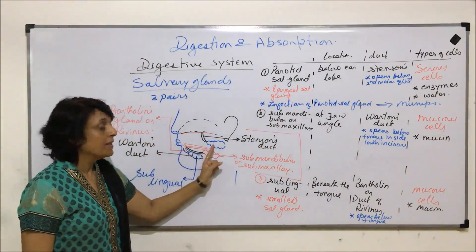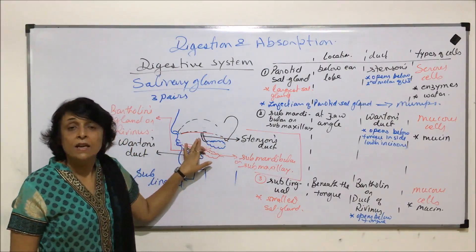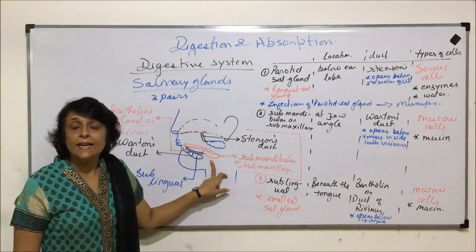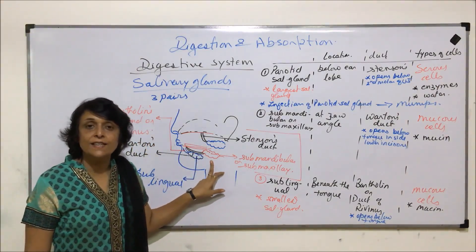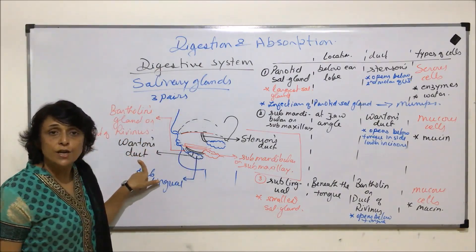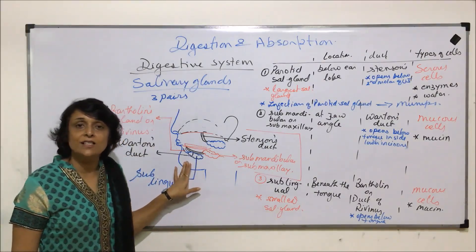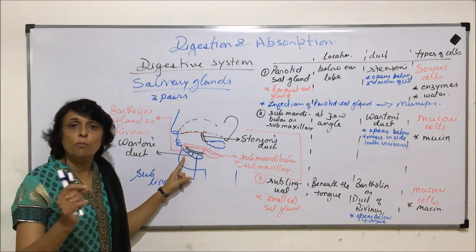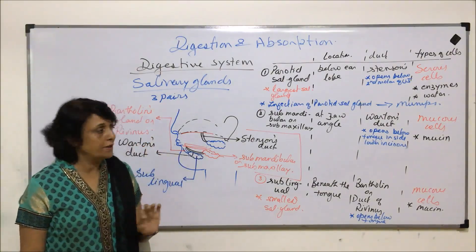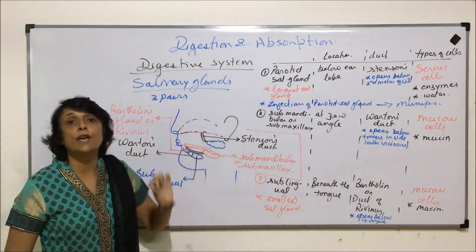So there are three pairs of salivary glands. The largest, parotid, is just beneath the earlobe; the duct is Stenson's duct, opening near the second molar of the upper jaw. The second, submandibular or submaxillary, is present at the jaw angle; its duct is Wharton's duct, opening just behind the lower incisors. The smallest, sublingual, is beneath the tongue; its duct opens just beneath the tongue and is known as Bartholin's duct or duct of Rivinus. Parotid is mainly made up of serous cells; the other two mainly have mucus cells.